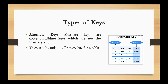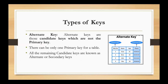There can be only one primary key in a table. The remaining candidate keys, after one is selected as the primary key, are known as alternate keys or secondary keys. So the alternate key is essentially any candidate key that was not chosen to be the primary key.